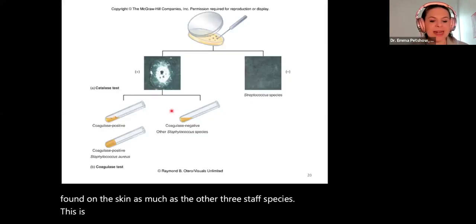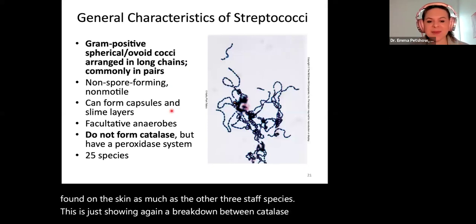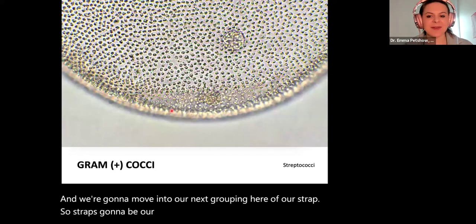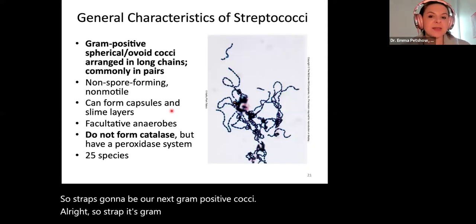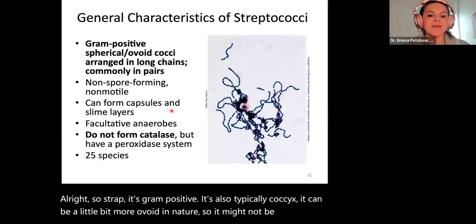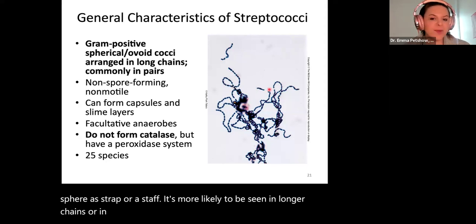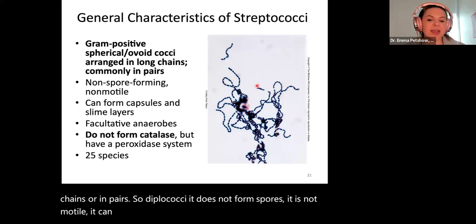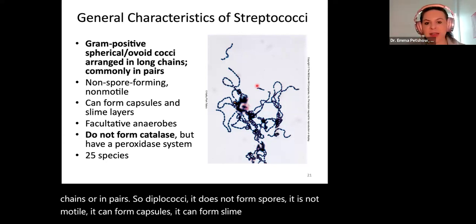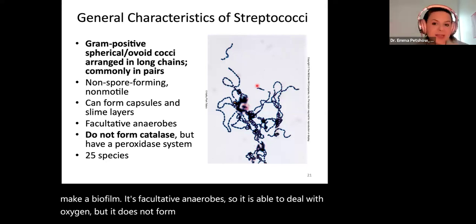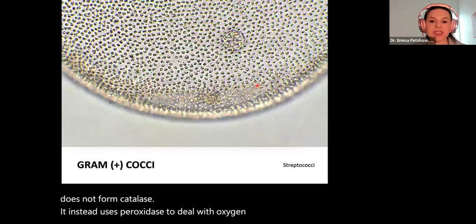Now moving into our next grouping — strep — our next gram-positive cocci. Strep is gram-positive, typically cocci but can be slightly more ovoid, and is more likely to be seen in longer chains or in pairs — diplococci. It does not form spores, is not motile, can form capsules and slime layers, making a biofilm. It's a facultative anaerobe — able to deal with oxygen, but it does not form catalase. It instead uses peroxidase to deal with oxygen species. There are over 25 species.